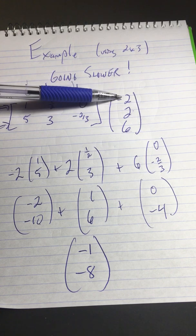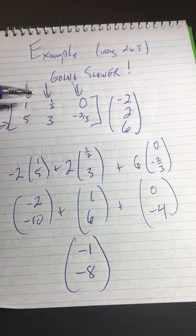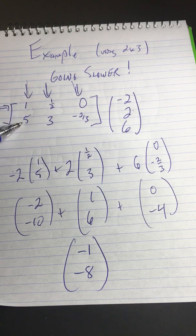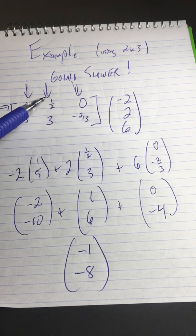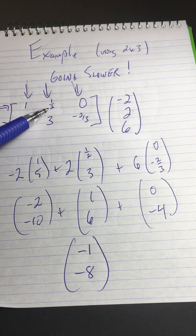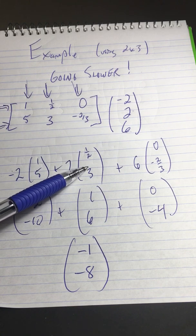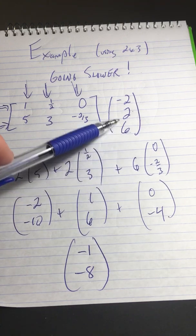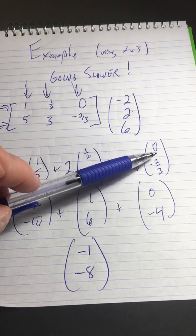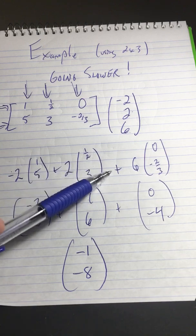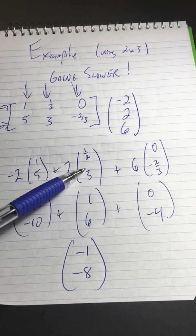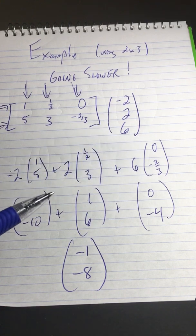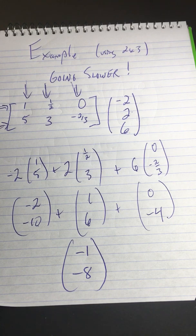Now, the way you do the transformation is you go the first entry times the first column. So I wrote down this negative 2 times this first column, 1, 5. Second entry times the second column. So this 2 by the second column, 1, half, 3, right here. Then this third entry, 6, we're going to multiply by this third column, which is 0, negative 2 thirds. And then we add. So it's first entry times first column plus second entry times second column plus third entry times third column. That's how you do it. Keep going until you get to the last entry times the last column. It's easy.